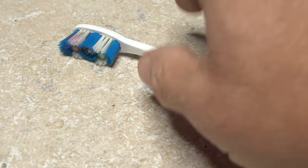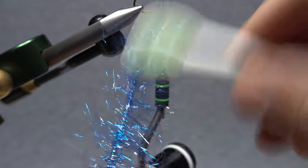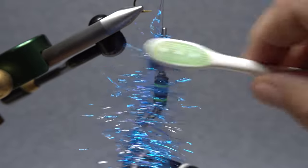Pick up a bodkin and run it along the thread to tease out any of the trapped ice dub. A toothbrush also works here. Just give the entire noodle a really good brushing and don't be shy either, it's very durable.